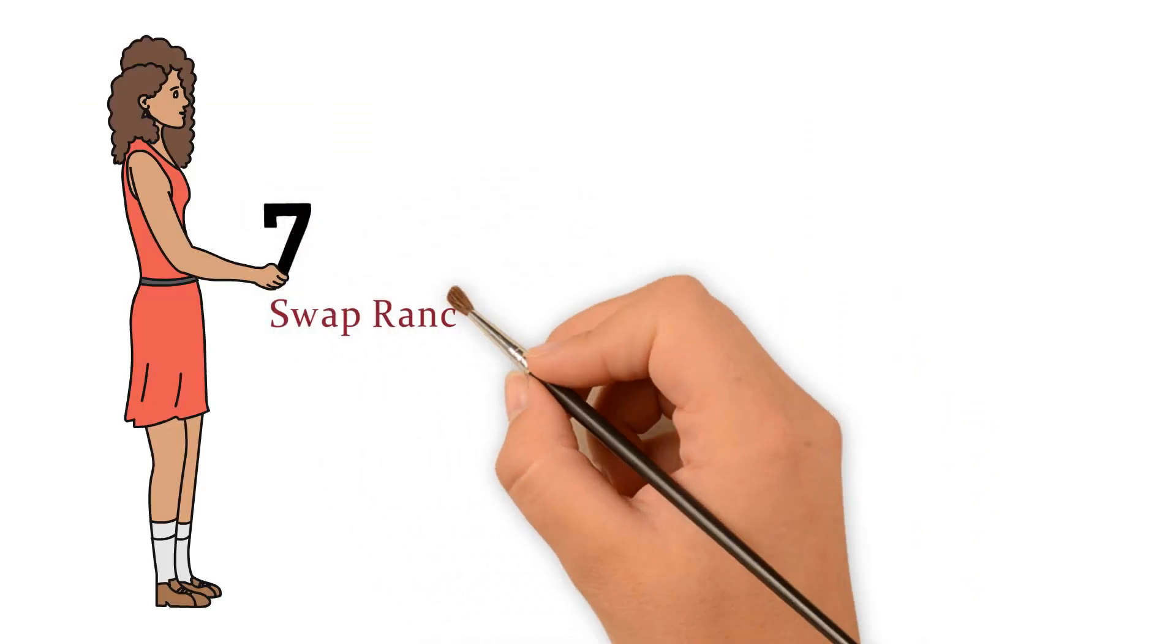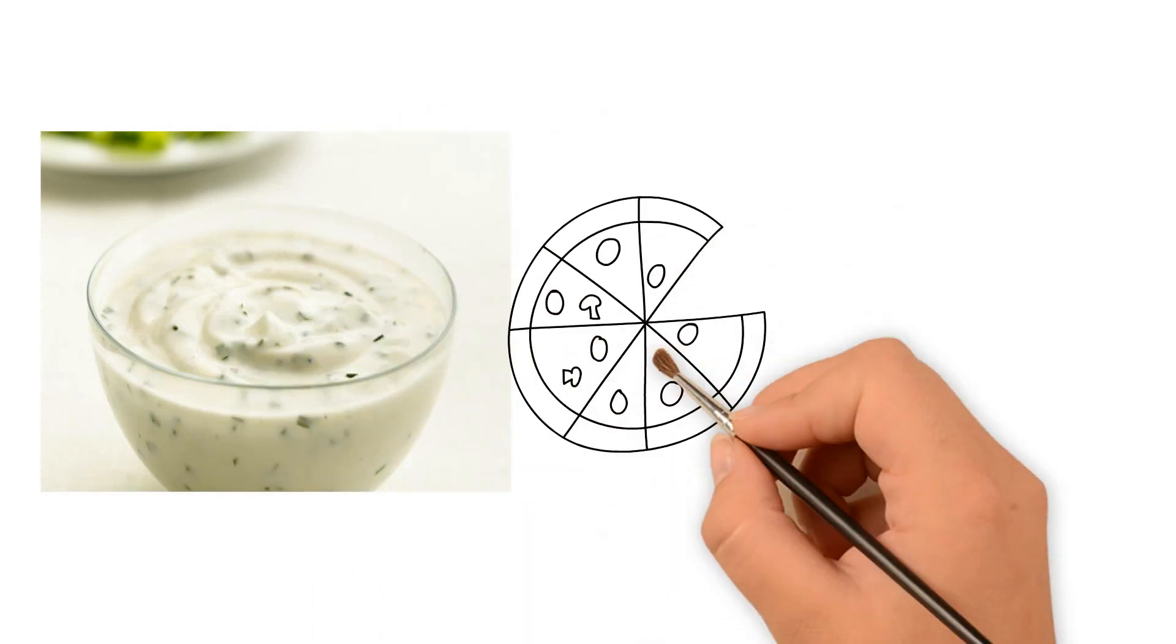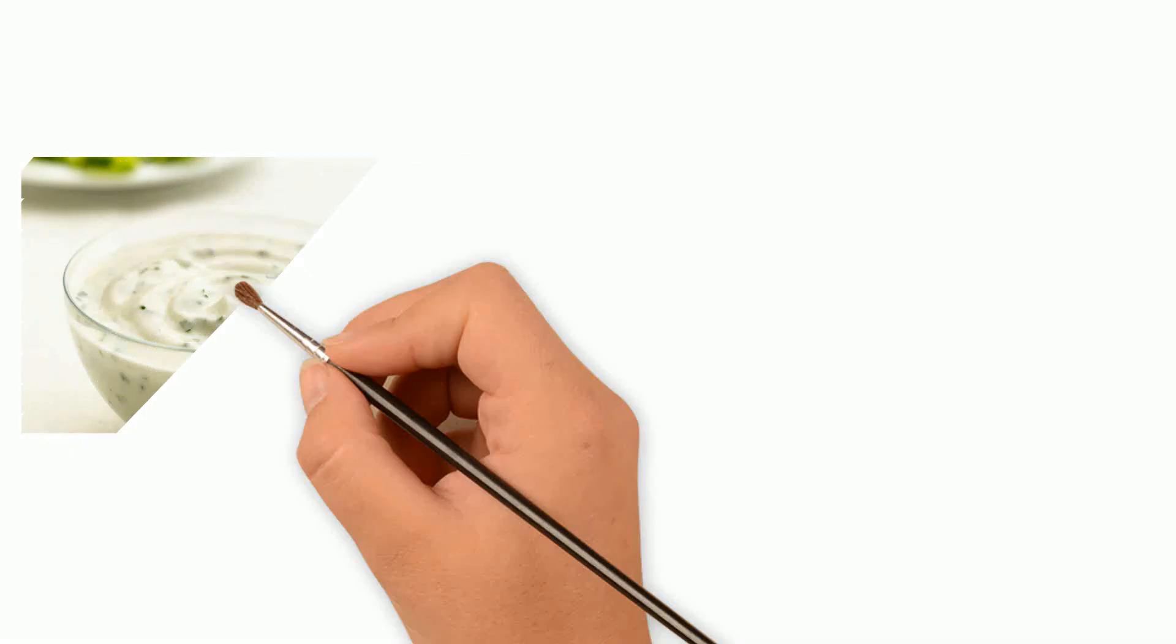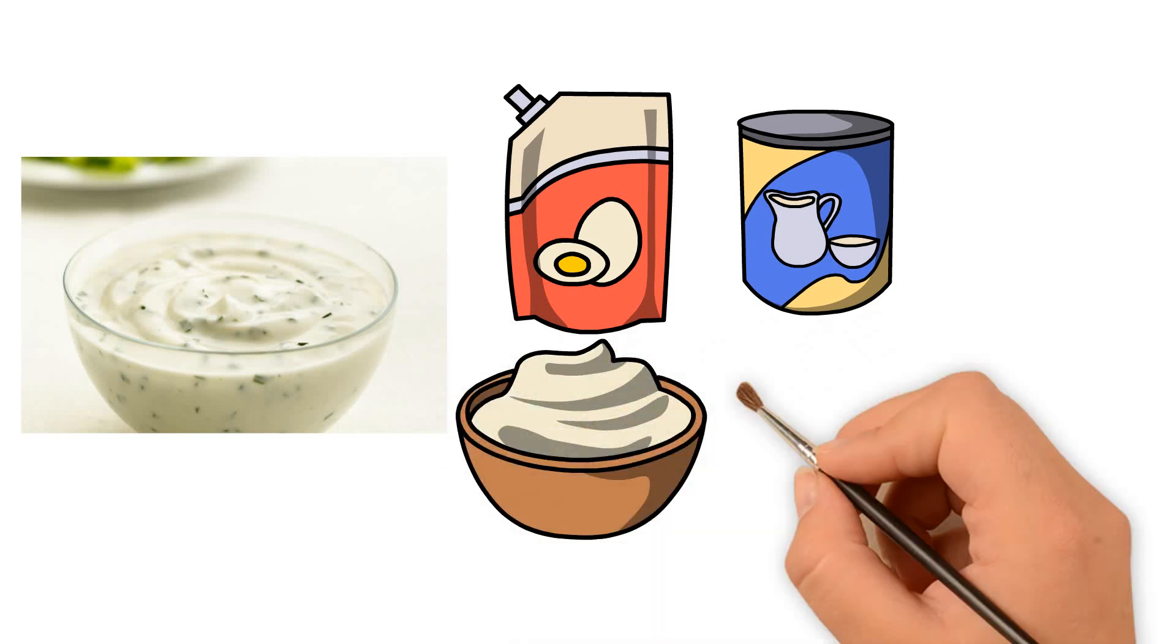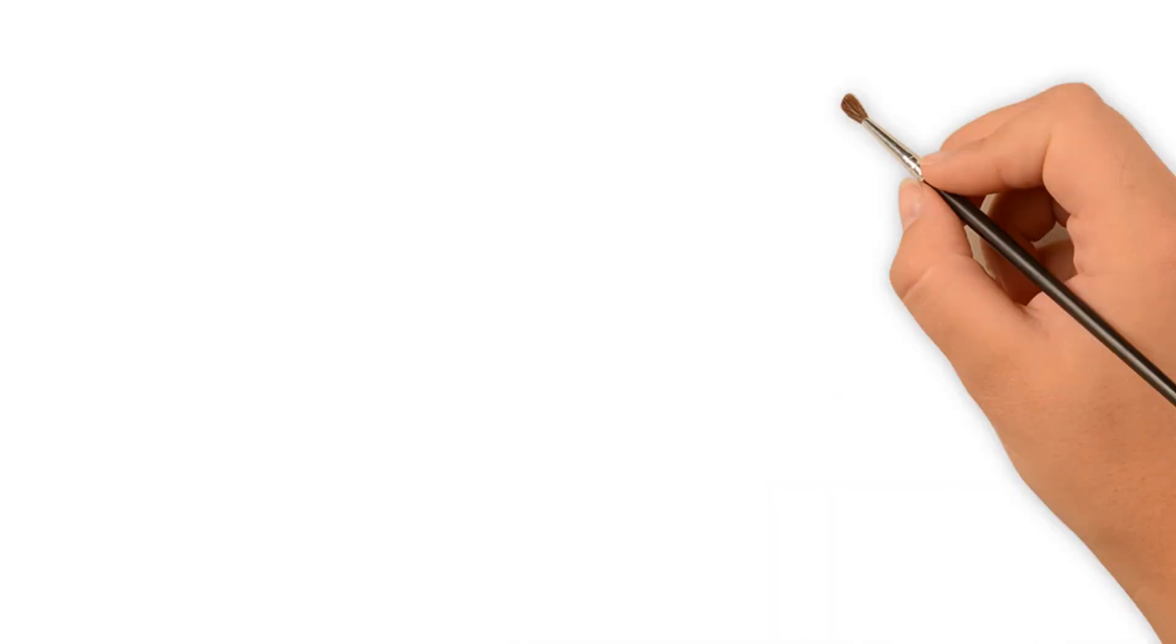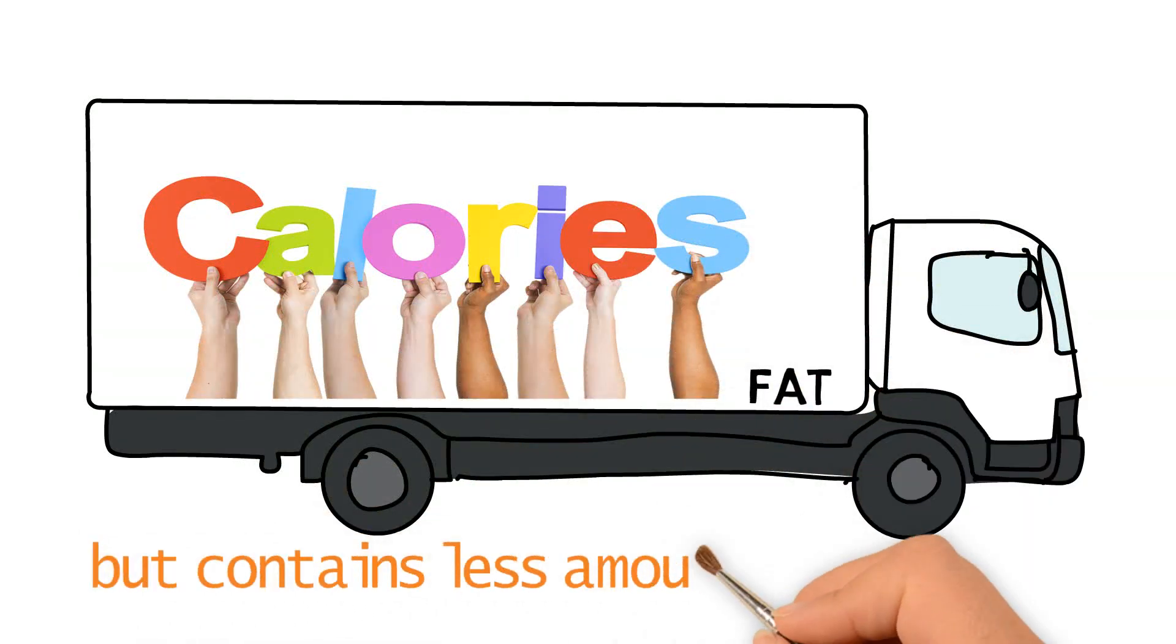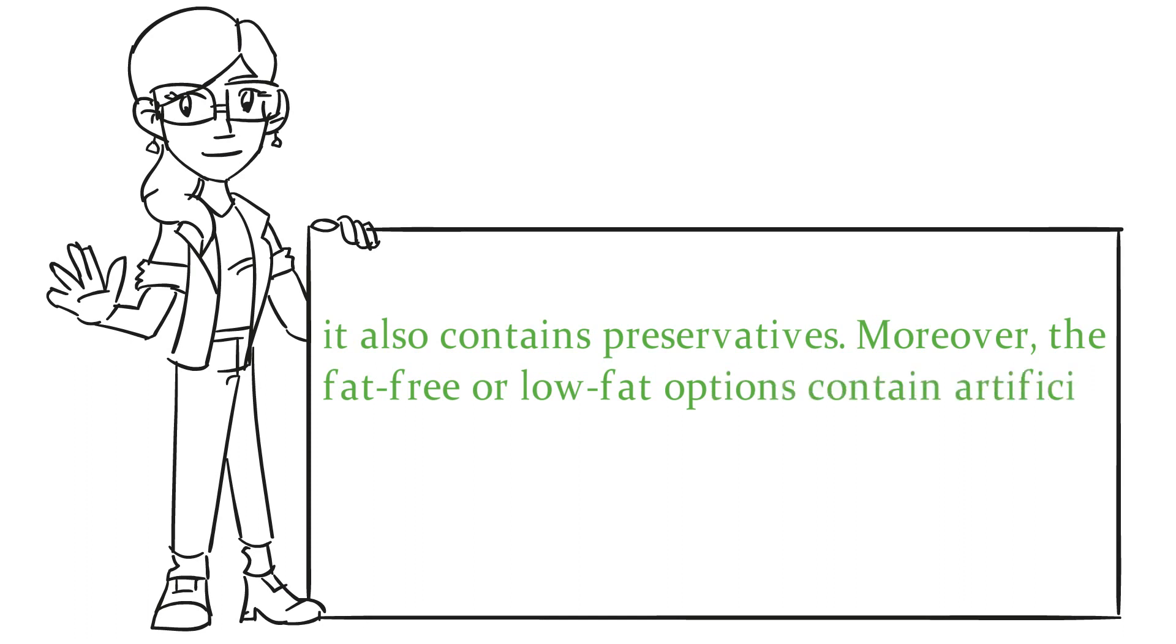7. Swap Ranch Dressing with Olive Oil and Vinegar. A drizzle of ranch dressings can make pizzas, bacon, and sandwiches delicious. However, ranch dressing is a combination of mayonnaise, buttermilk, sour cream, table salt, and black pepper. Consequently, it is loaded with calories and fat but contains less amount of protein. Apart from these, it also contains preservatives. Moreover, the fat-free or low-fat options contain artificial sweeteners, which may cause weight gain and heart diseases.